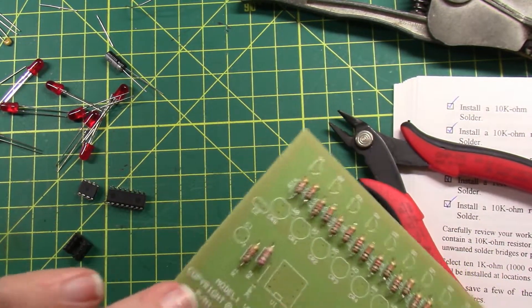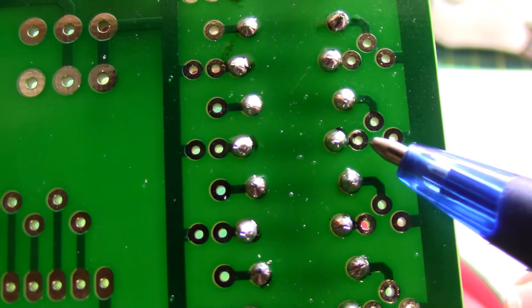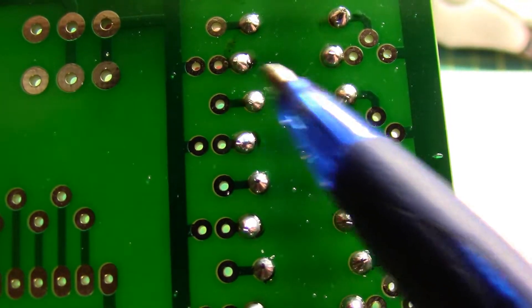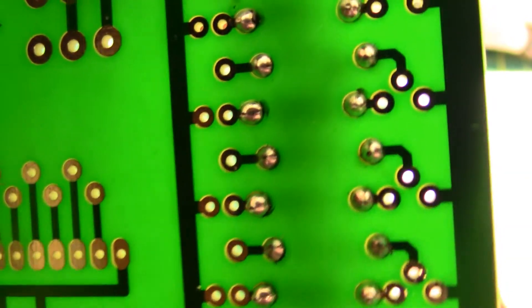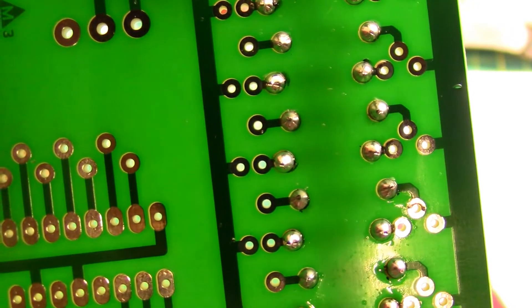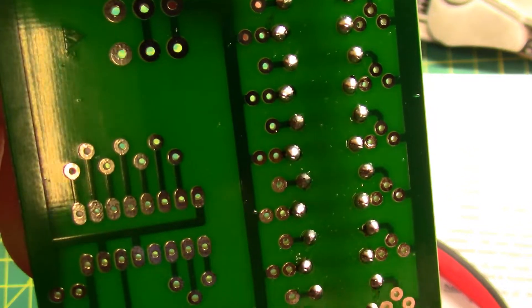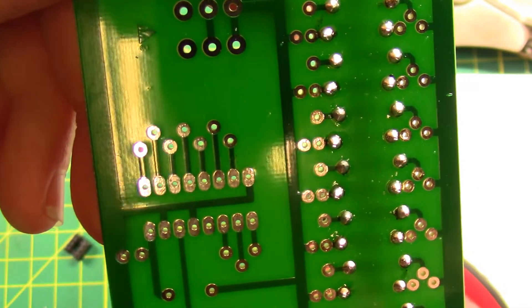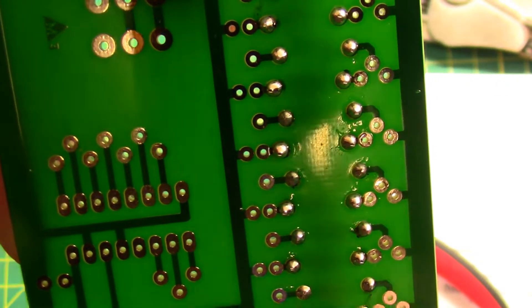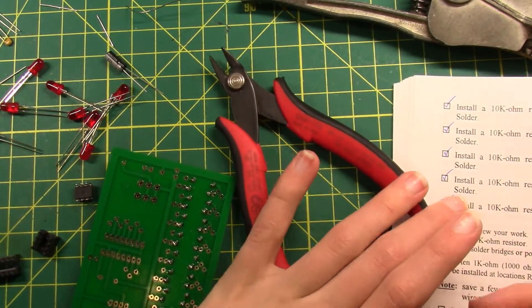Alright, so I soldered in all of the resistors, and if you look really closely at the board, you can see that the solder joints are really close to these future solder joints, and I want to make sure that they're not fused. I'm not sure if they should be, but they were really close to each other, almost as if they were supposed to be fused. So I'm just going to double check real quick, take a magnifying glass and make sure none of them are fused. So let's check off the resistors and move on to the next step.